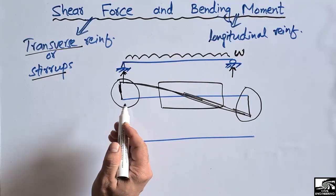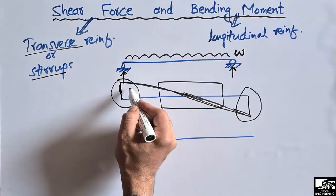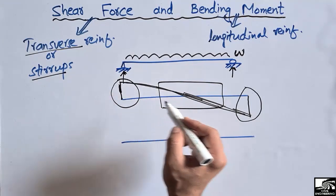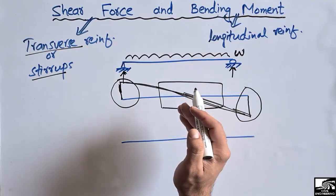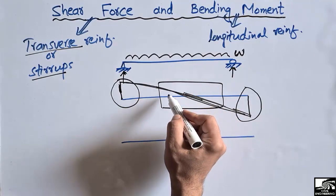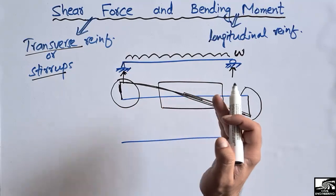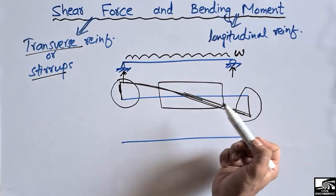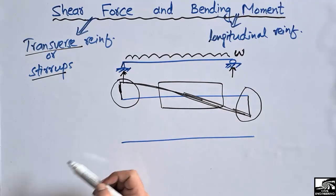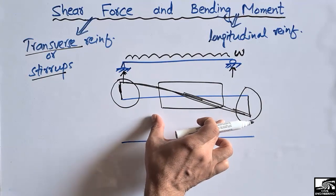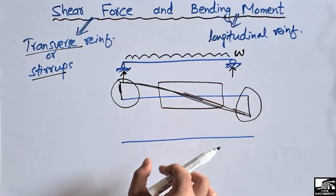So we can see there is more requirement of shear reinforcement — transverse reinforcement or stirrups — at the corners of the beam. We should place the stirrups more closely at the corners, while at the mid-span we can provide the stirrups at a higher spacing from one another. Later I will show how we provide the stirrups in such a beam.